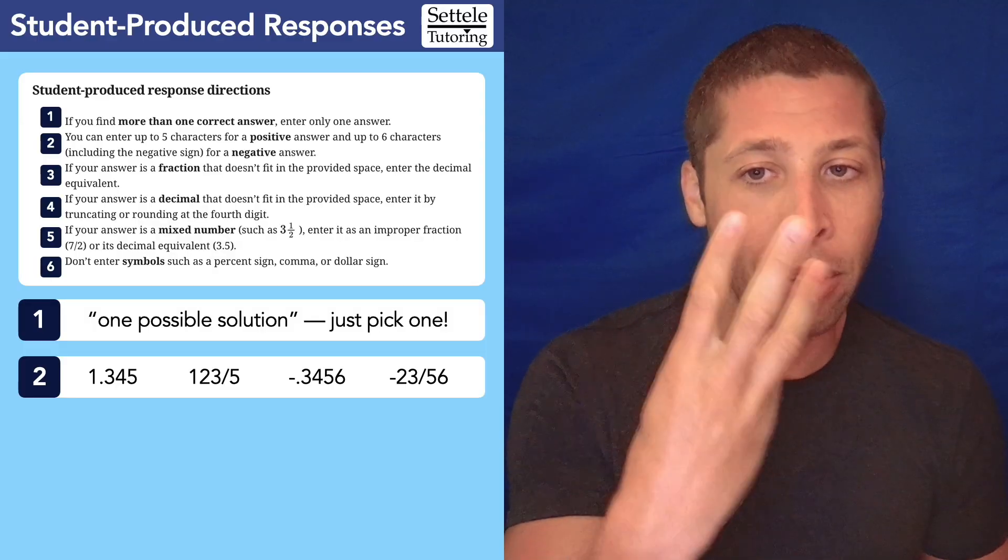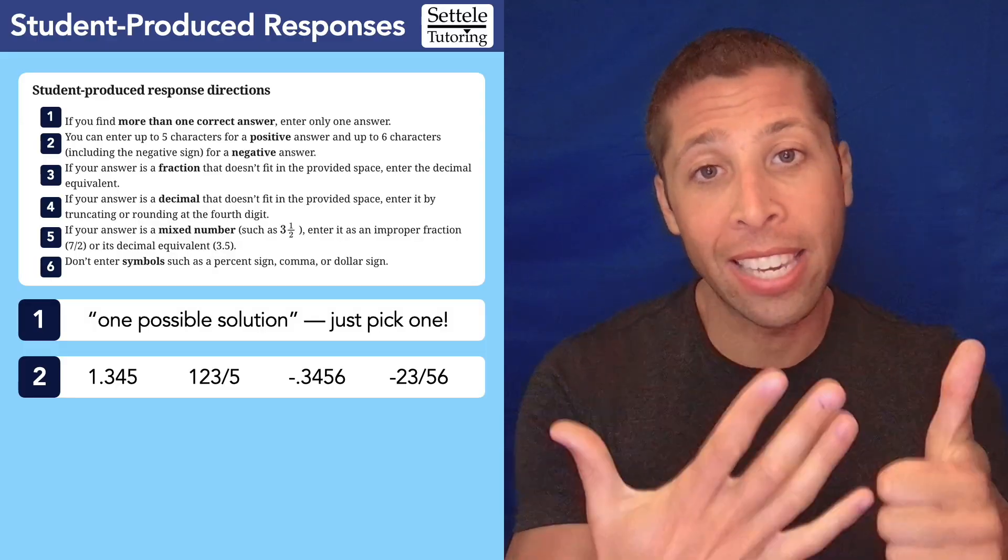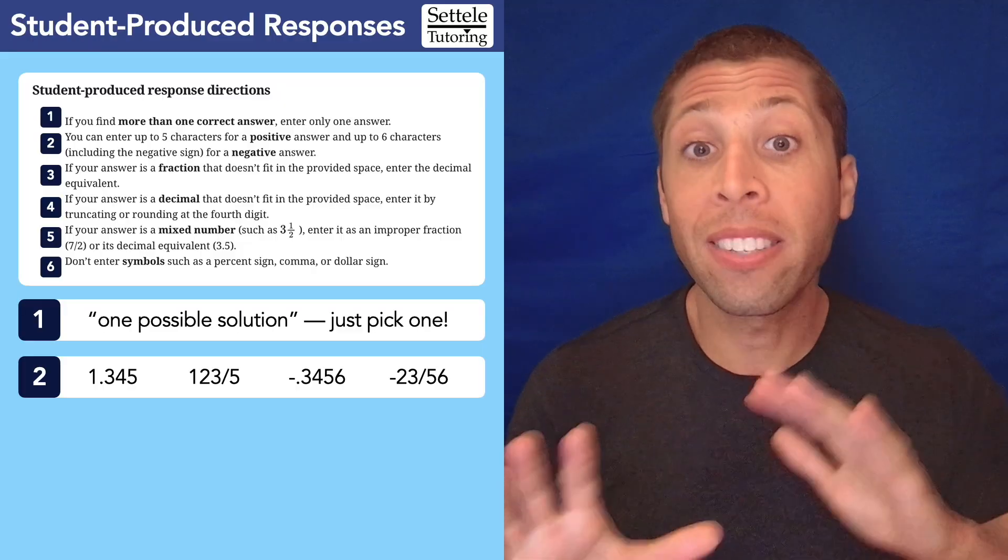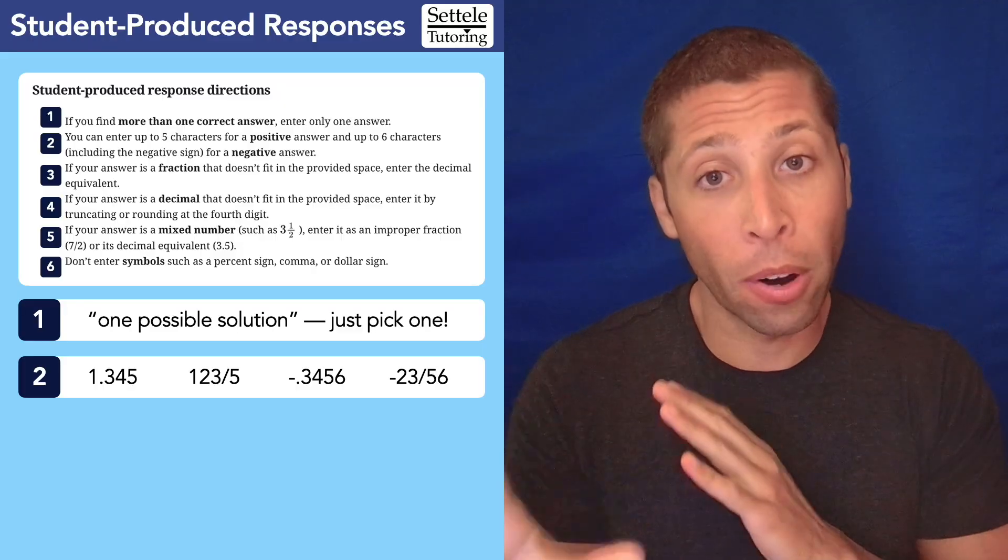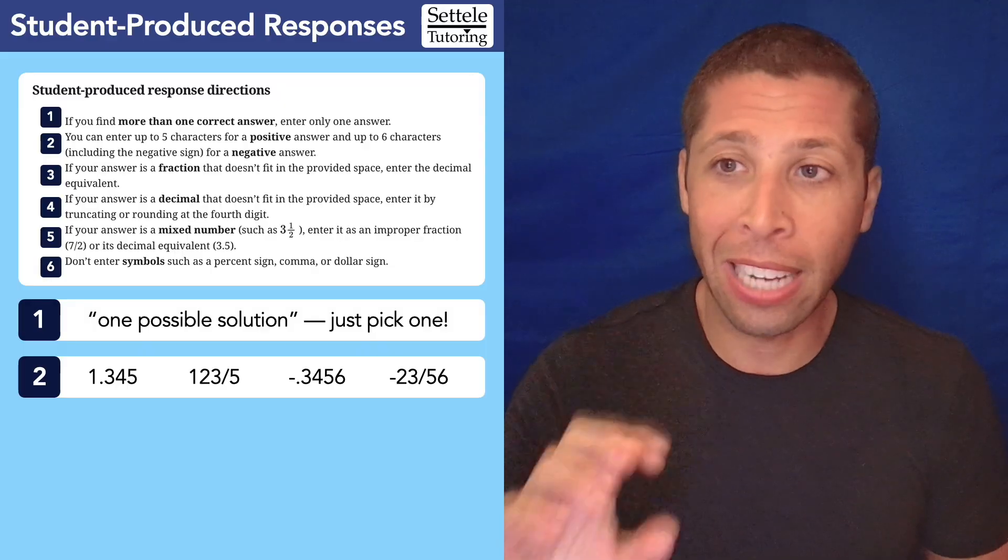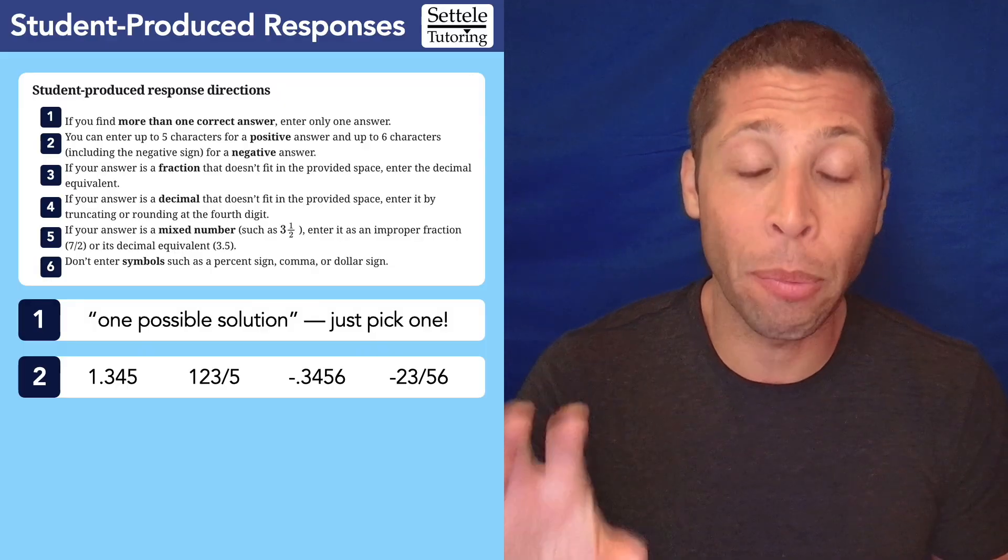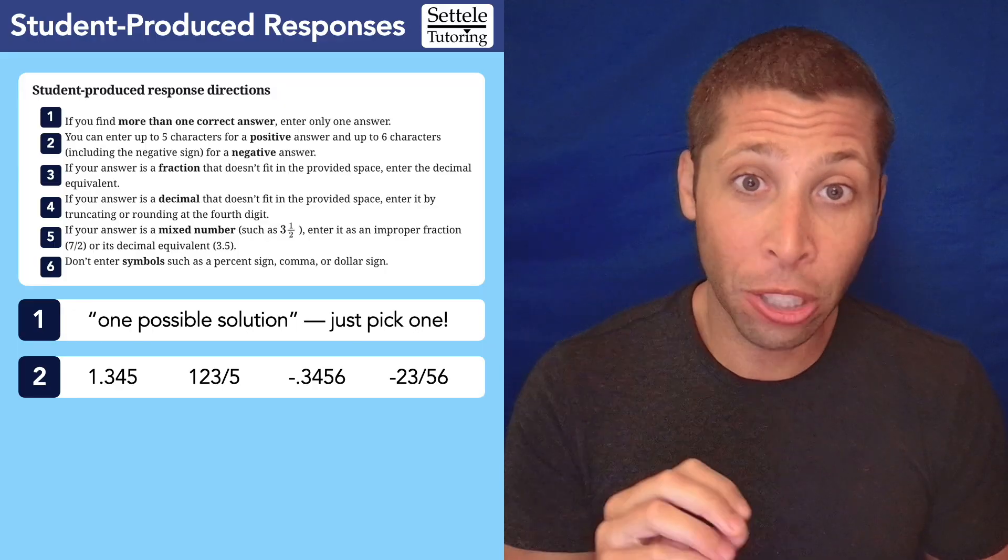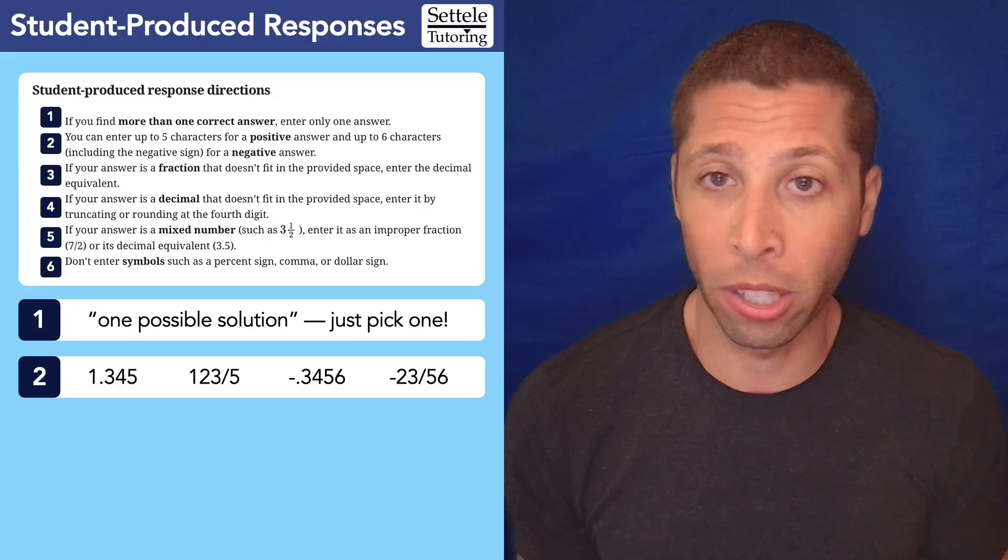The decimal point still counts as one as well. And then negative 23 slash 56, again, six characters. So that is the maximum limit. The Blue Book app, as far as I know, will not let you go over that limit. So you don't have to really worry about that, but it is going to come in handy for numbers three, four, and five that we understand what the character limit is.